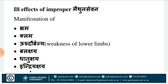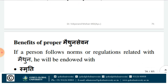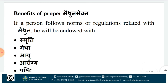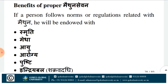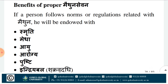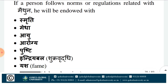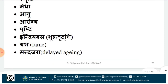Ill effects of improper Maithuna Sevana: Brahma, Klama, Urudorbala (weakness of lower limbs), Balakshaya, Dhatukshaya, Indriyakshaya, Aprakamarana (untimely or early death). Benefits of proper Maithuna Sevana: Smriti, Medha, Aayu, Aarogya, Pushti, Indriyabala — that is Shukravridhi, Yasha (fame), Mandajara (delayed aging).